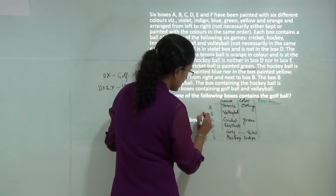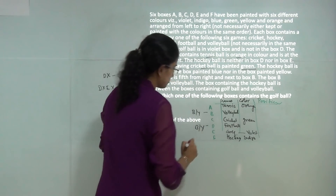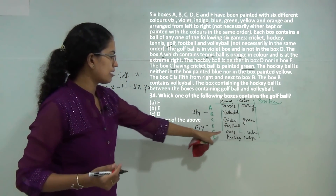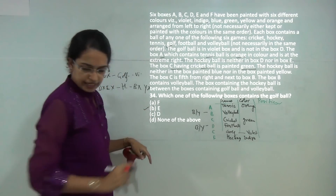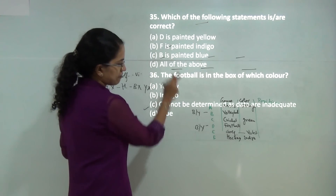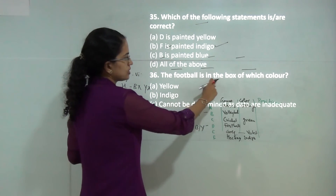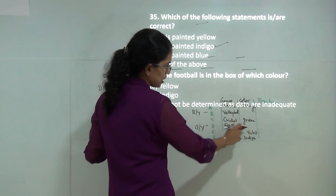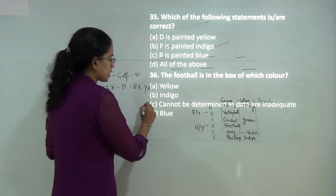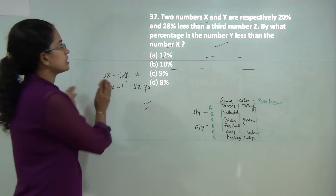Football is in D. For D and B, either can be blue or yellow. The question asks which box contains the golf ball — that is E, so E is the correct answer. The next statement asks which is correct: F is painted indigo — that is correct. For the colour of the football box, it could be blue or yellow, so it cannot be determined as data is inadequate.